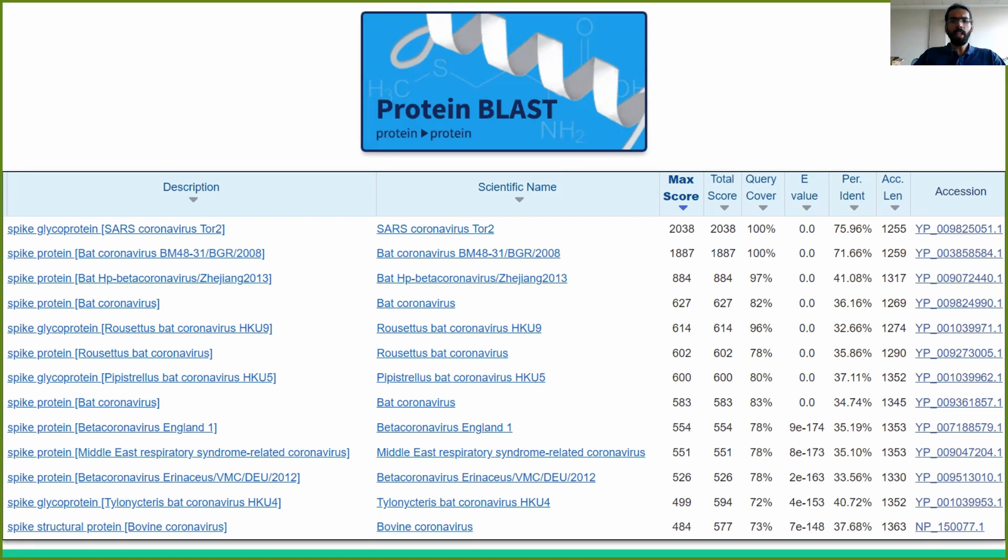Each of these representative sequences is known as a reference sequence for that viral strain. Because we're only allowing one sequence per viral strain, we can expect these sequences to be far more distinct from one another than in the results of our previous search, which can be observed in lower percent identities as well as in lower max scores.